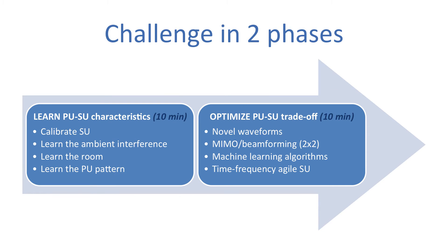Each team participating in the challenge will have to operate in two modes for two phases. During the first phase, teams will have the opportunity to calibrate their secondary user and learn the impact of ambient interference, the room, and the primary user. Feedback from the primary user receiver is given in real time to the secondary user so it can learn how to adapt its parameters optimally.